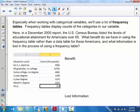Let's talk about a new type of table here. Especially when we're working with categorical variables, we use a lot of frequency tables. Frequency tables display counts of the categories in our variable. In the December 2000 report, the U.S. Census Bureau listed the levels of educational attainment for Americans over 65. What benefit do we have in using the frequency table rather than a data table, and what info is lost in the process?